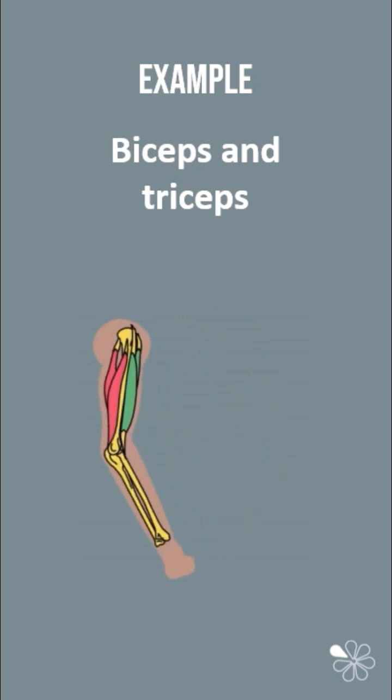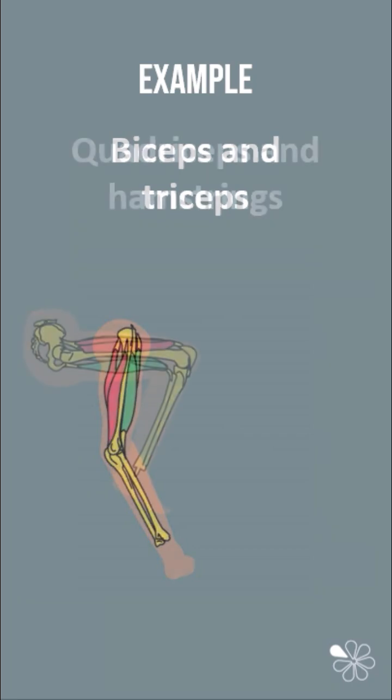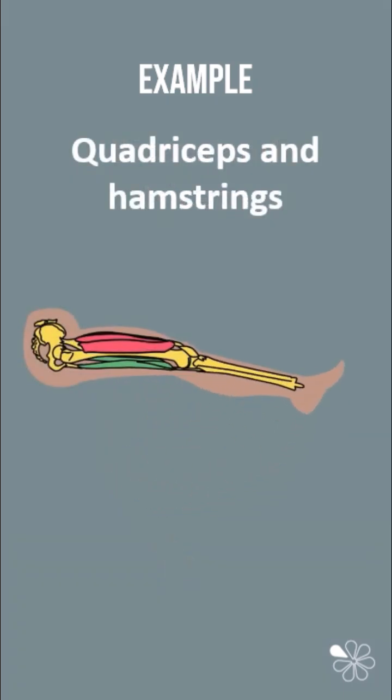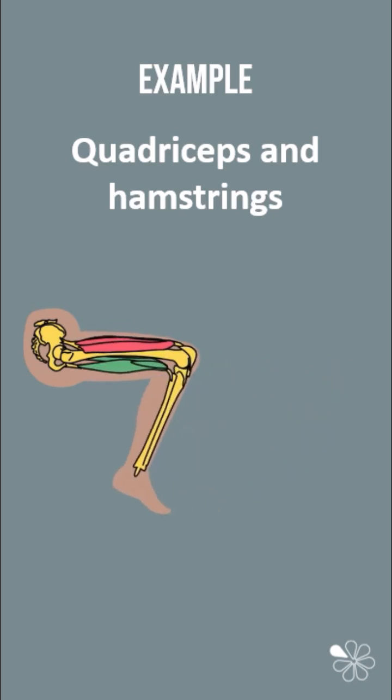When you extend your arm out, the reverse happens. In this example, you can see the quadriceps in red and the hamstrings in green, working in opposition to one another to bend and straighten the leg at the knee.